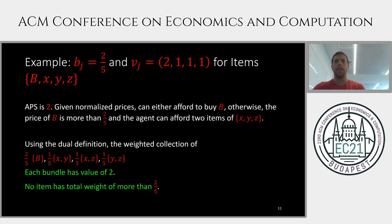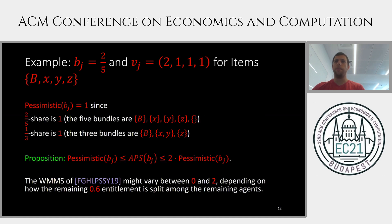Another example: with an entitlement of 0.4 and 4 items of values 2, 1, 1, 1, the any-price share is 2. For every pricing, an agent can either afford the big item or two of the small items. Using the dual definition, we can construct a weighted collection with one bundle containing the big item with weight 2/5, and three bundles containing two small items each with weight 1/5 — each bundle has value 2 and each item has weight at most 2/5. In contrast, the pessimistic share in this example is only 1, since dividing into 5 bundles gives a least-valued bundle of 1.